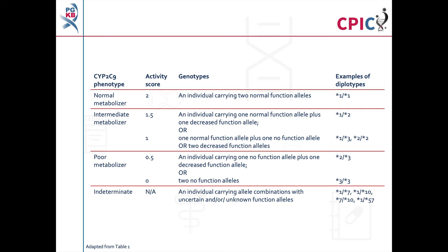Note that as more evidence becomes available, new star alleles can be added and the functional definition of some star alleles may change. An important caveat for all genotyping tests is that any alleles which are not detected in the assay are designated as star 1. This could include rare increased function, reduced function, and non-functional alleles which are not routinely screened for in some genotyping tests.